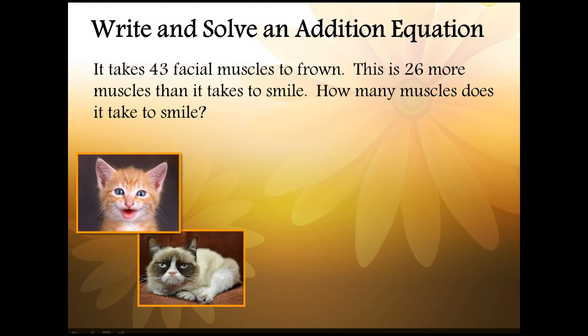Let's try solving some word problems. In these word problems we will write and solve an addition equation. The addition tells us that we'll have a plus sign and equation tells us we'll have an equal sign. If you want you can go ahead and set that part up first. It takes 43 facial muscles to frown. This is 26 more muscles than it takes to smile. Just how many muscles does it take to smile? Let's set up our equation.